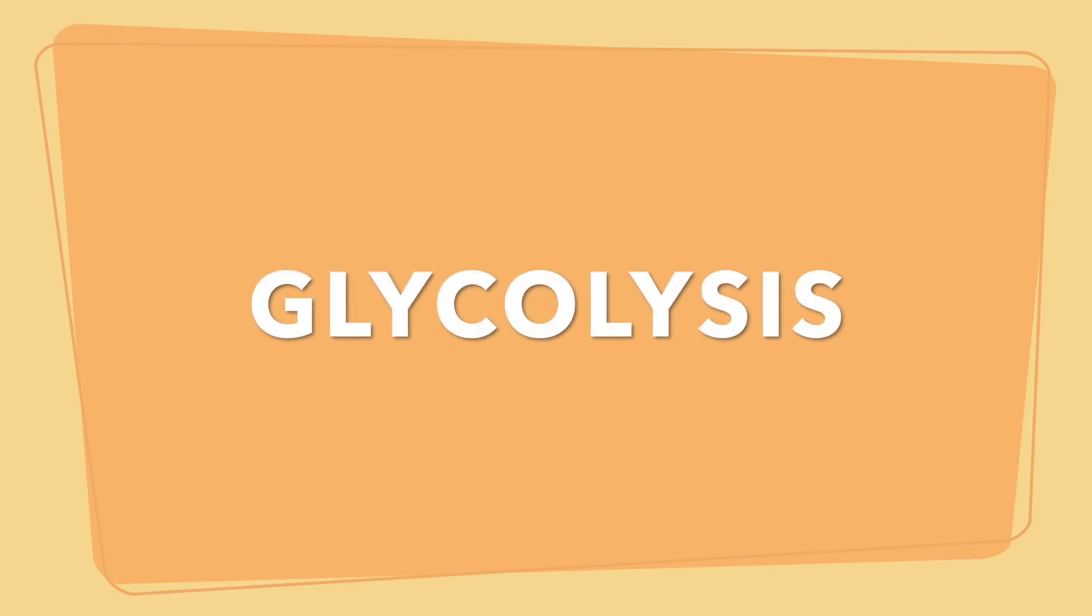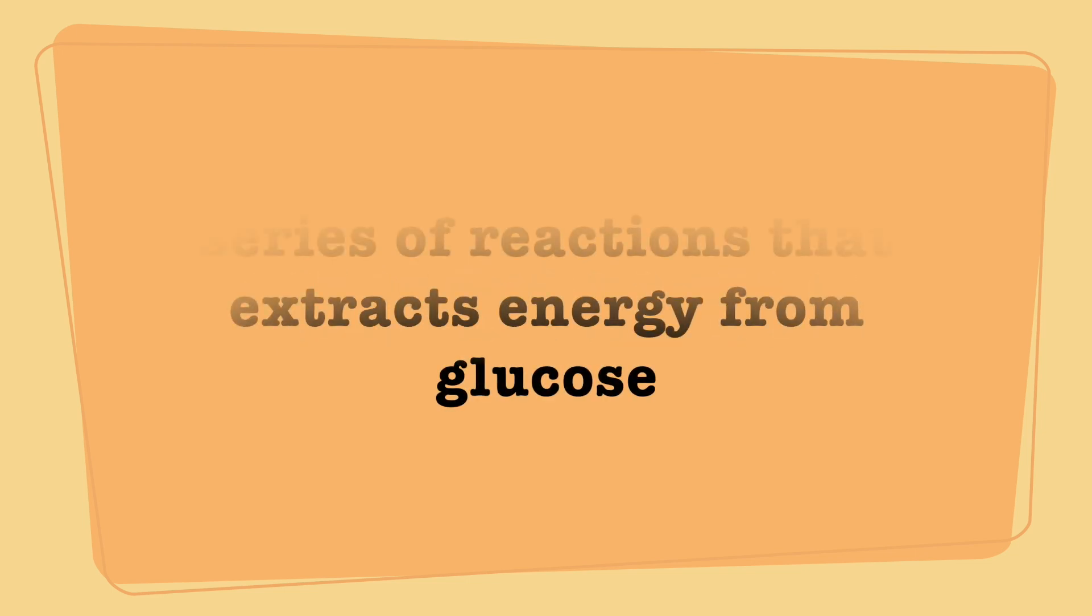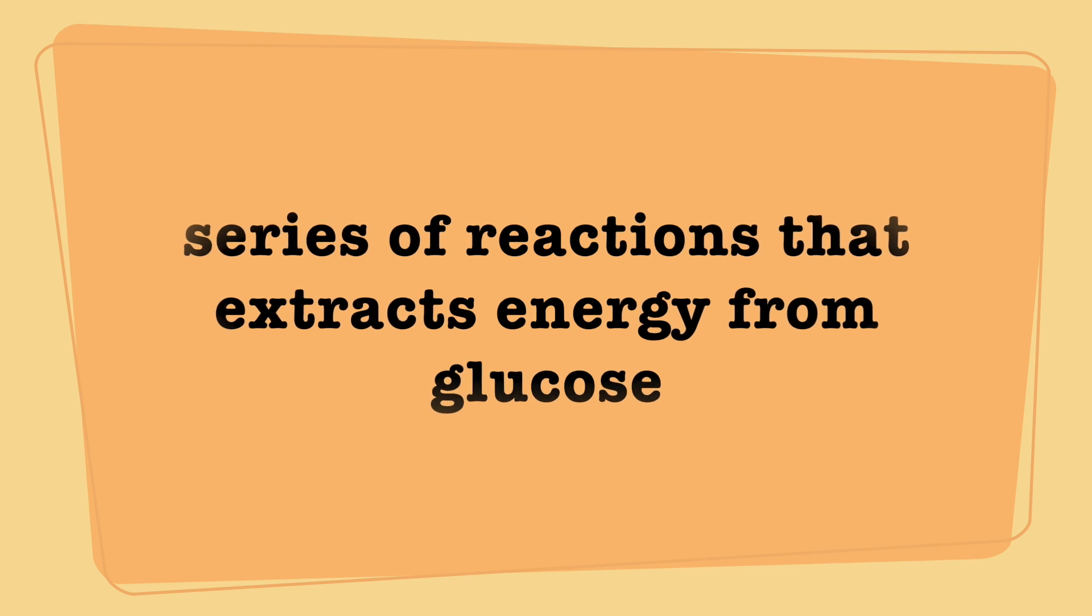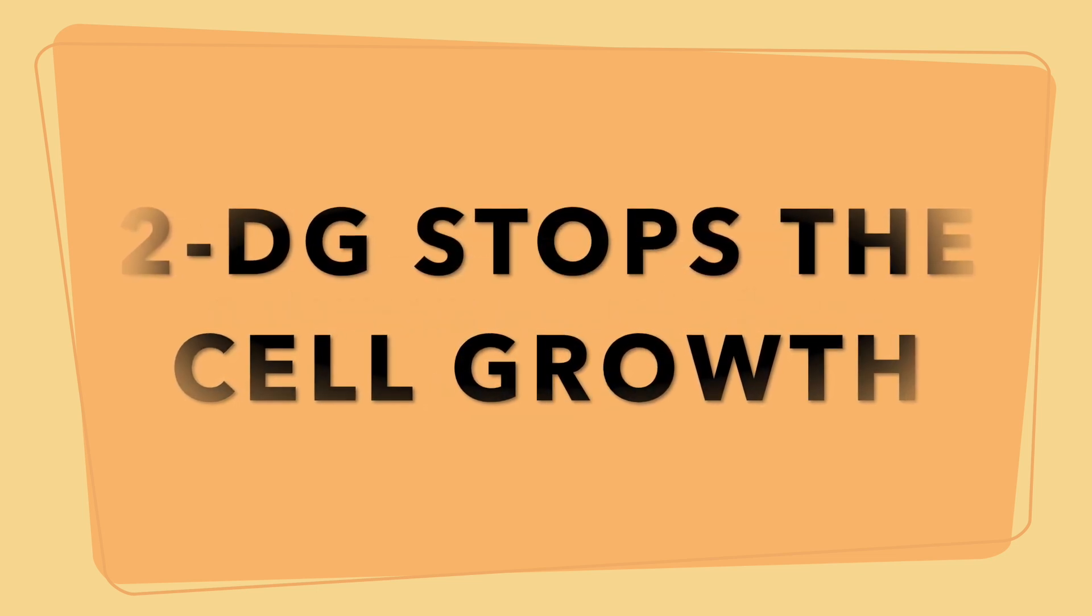So now what does glycolysis do? Basically, glycolysis is a series of reactions that extracts energy from glucose. So when 2-DG is given to the patient, it stops the cell growth.